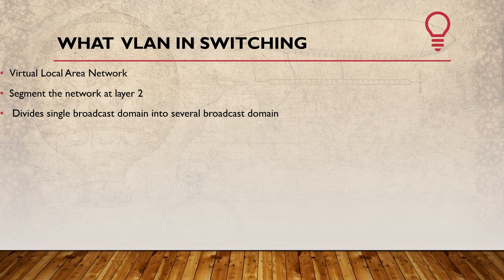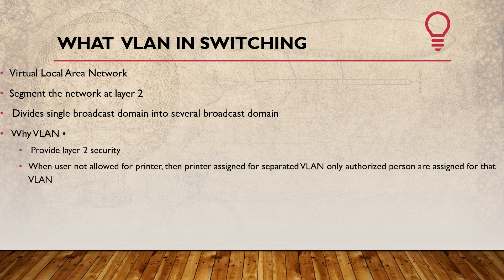Using VLAN, a single physical network with 10 departments can be segregated into separate broadcast domains. The Sales team gets its own broadcast domain VLAN, the Marketing team gets its own VLAN, the IT team its own VLAN, the Mechanical team its own VLAN, and the HR team its own VLAN.